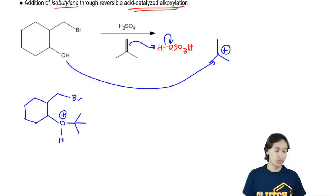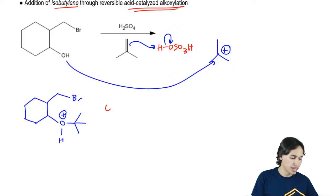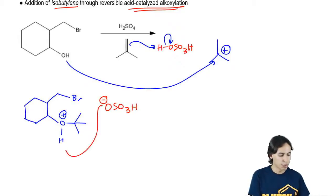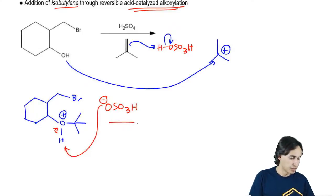Now how do you think we could get rid of that positive charge? Smart. What we could do is we could use the conjugate of my original acid. So I'm going to go ahead and use the conjugate of my sulfuric acid. I'm going to deprotonate and lo and behold, look what I've got. I now have an ether instead of an alcohol.